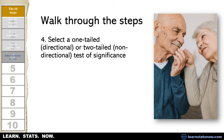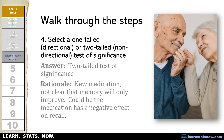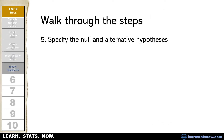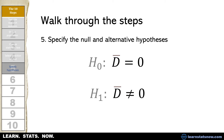Step four: select a one-tailed directional or two-tailed non-directional test of significance. A two-tailed test makes sense here because it's a new medication — it's not clear that memory will only improve; it could get worse from taking the medication. Then we specify the null and alternative hypotheses. The null hypothesis is that the mean d score should be zero — if there's no effect for the drug on short-term memory, we'd expect the mean of all d scores to be the same post-test as pre-test. In a two-tailed test, the alternative hypothesis is that the mean d score will not equal zero.